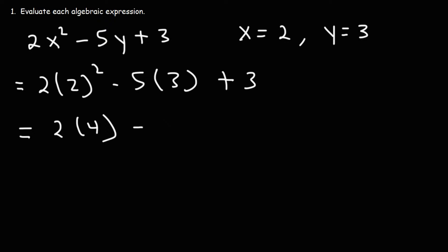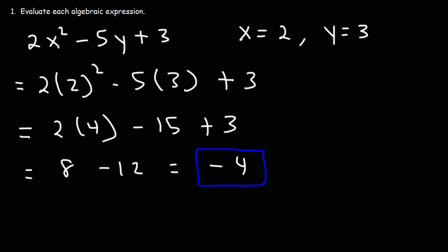5 times 3 is 15. 2 times 4 is 8. Negative 15 plus 3 is negative 12. And 8 minus 12 is negative 4, so that's the answer. If you ever want to check your work, I recommend plugging in what you have after substituting x and y into a calculator. Type in 2 times 2 squared minus 5 times 3 plus 3 and check that it gives you the same final answer.